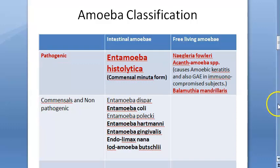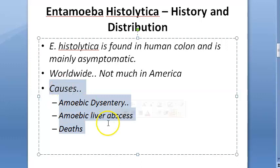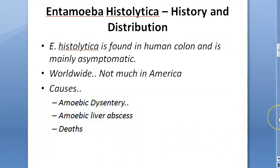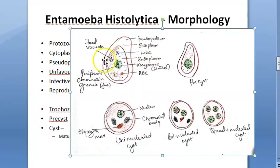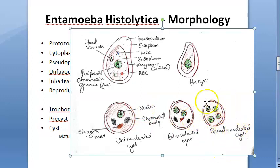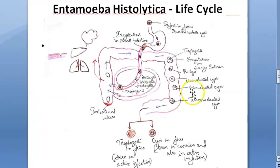Entamoeba histolytica is found worldwide, usually asymptomatic in humans. It causes amoebic dysentery, amoebic liver abscess, and can cause deaths. The morphology includes: trophozoite form, pre-cyst, uninucleated cyst, binucleated cyst, and quadrinucleated cyst. Cysts are formed in unfavorable environments. The quadrinucleated cyst is the infective form.